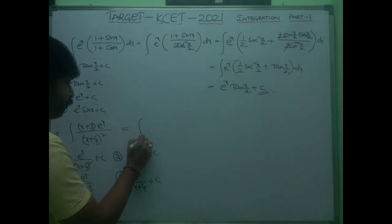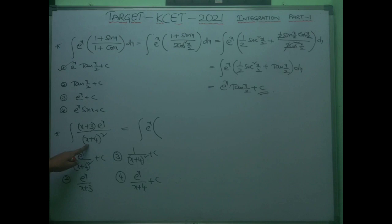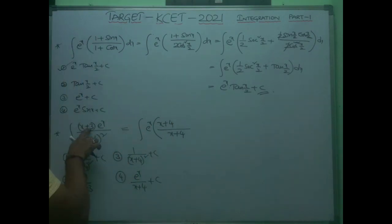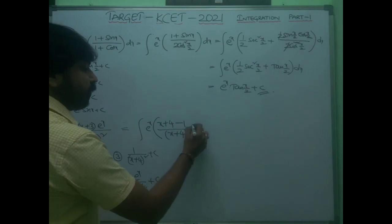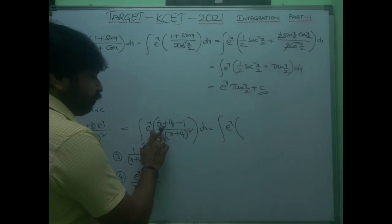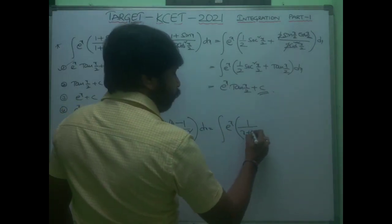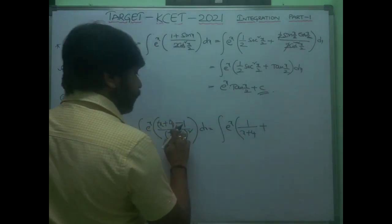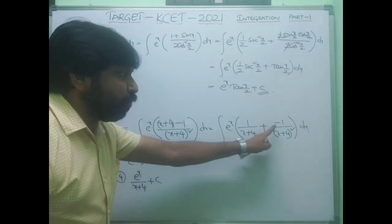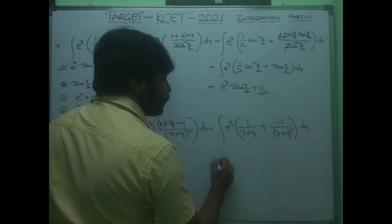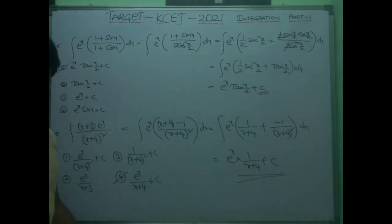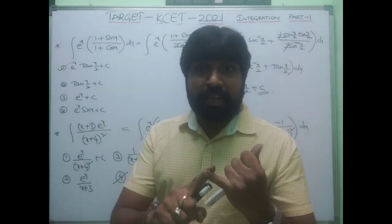Second: ∫e^x · (x + 3)/(x + 4)² dx (a 2017 question). Rewrite the numerator as (x + 4) − 1, giving ∫e^x · [(x + 4)/(x + 4)² − 1/(x + 4)²] dx = ∫e^x · [1/(x + 4) − 1/(x + 4)²] dx. Since d/dx[1/(x + 4)] = −1/(x + 4)², we have f(x) = 1/(x + 4) and f'(x) = −1/(x + 4)². The answer is e^x/(x + 4) + c — fourth option.